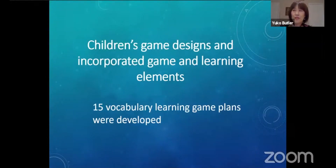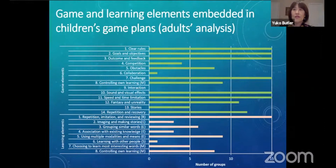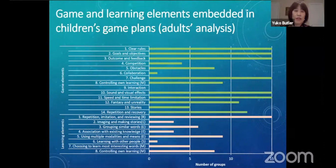This figure indicates the frequency of elements found in the 15 game designs. With respect to the game elements, all the games had clear rules, goals and objectives, outcome and feedback, challenge, sound and visual effects, and speed and time limitation. Having fantasy and having a chance to repeat, recover, and having control over game playing were also frequently incorporated. Regarding the learning elements, all the games had elements of repetition, imitation, and reviewing. Metacognitive strategy elements like controlling one's own learning and choosing words of personal interest were also relatively common.